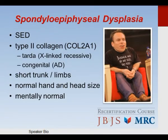Spondyloepiphyseal dysplasia is another collagen disorder — in this case, type 2 collagen. There are two types: a TARDA type, which is X-linked recessive, and a congenital type, which is autosomal dominant. The manifestation is short trunk and short limbs. These patients are mentally normal.